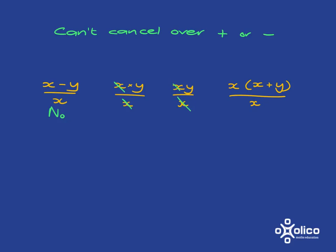And then in this last one, well, we can do some cancelling because we've got x multiplied by this whole thing. So even though this whole thing has got a plus in it, it doesn't matter. It's x multiplied by this whole thing. So we can cancel these two x's and be left with x plus y.